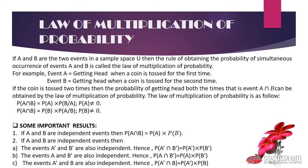Some important results based on multiplication of probability: First, if A and B are independent events, then P(A∩B) = P(A) × P(B). Second, if A and B are independent events, then their complements A' and B' are also independent, giving P(A'∩B') = P(A') × P(B'). Also, P(A∩B') = P(A) × P(B'), and P(A'∩B) = P(A') × P(B).